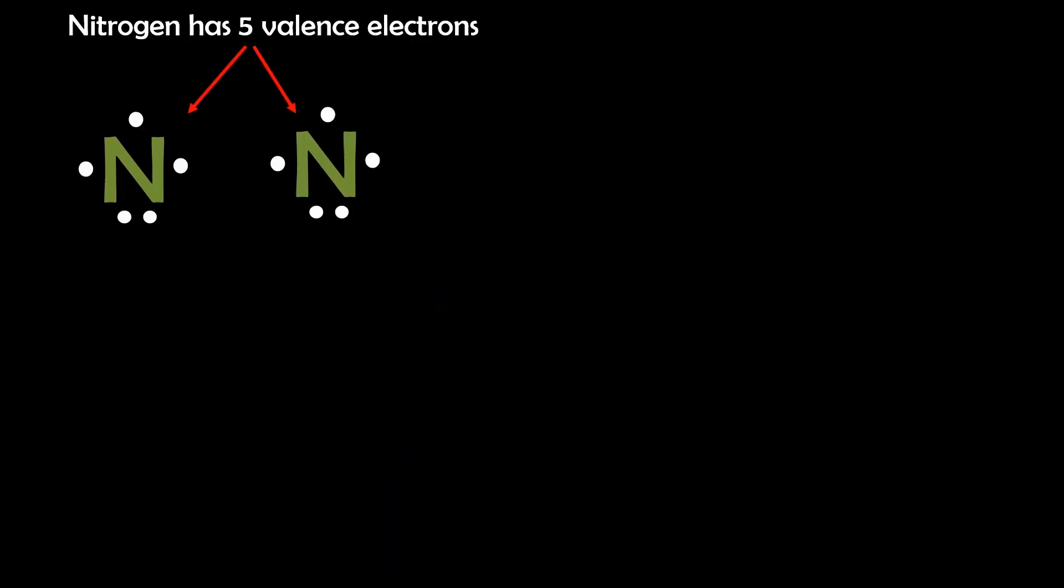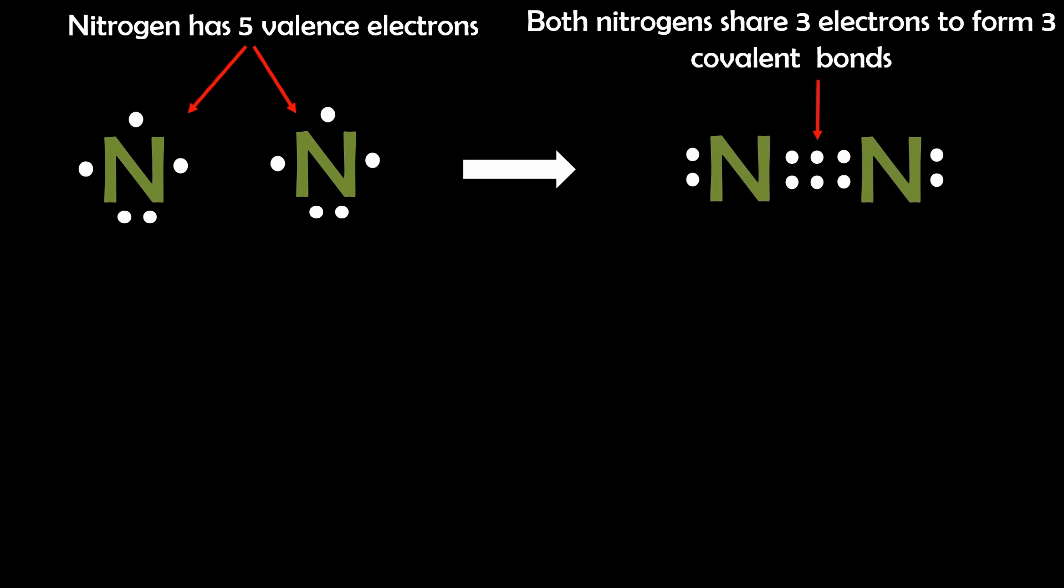Another example is nitrogen gas or N2. Each nitrogen atom has five valence electrons and you will notice that they have three singular electrons. So to achieve a stable configuration they share three pairs of electrons forming a triple bond. The Lewis structure for N2 is down the bottom here.